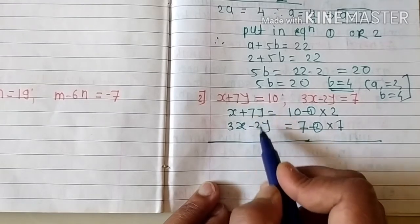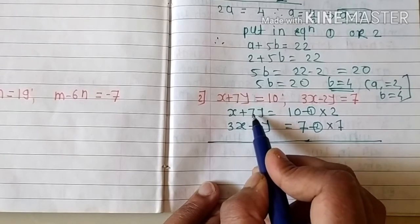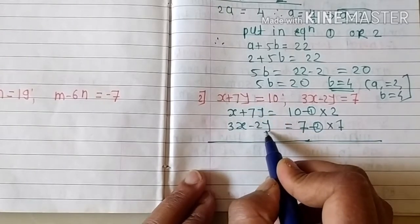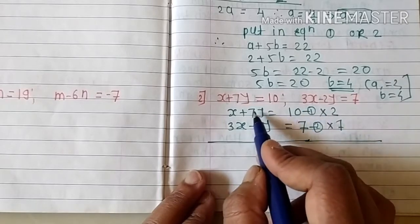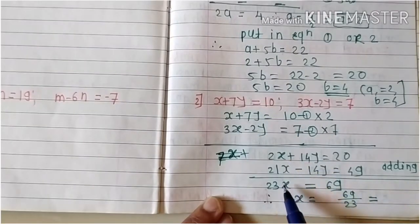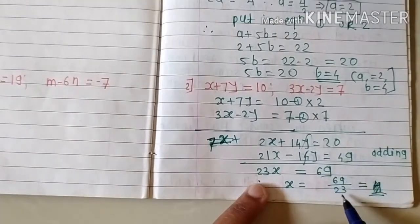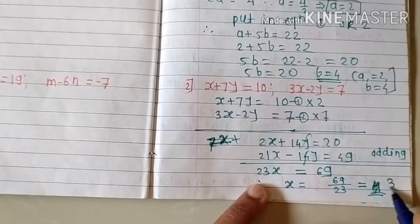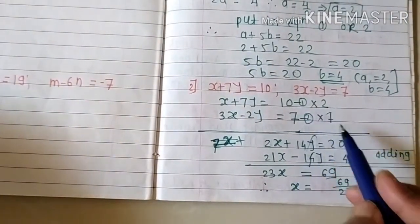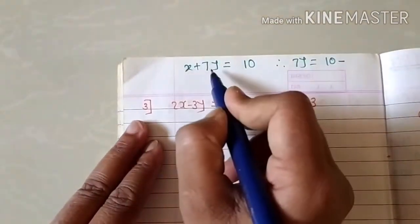To make the coefficient of y equal, multiply the second equation by 7 and the first equation by 2. After multiplying and adding the two equations, the y terms cancel, leaving 23x equals 69, so x equals 69 over 23, which equals 3.